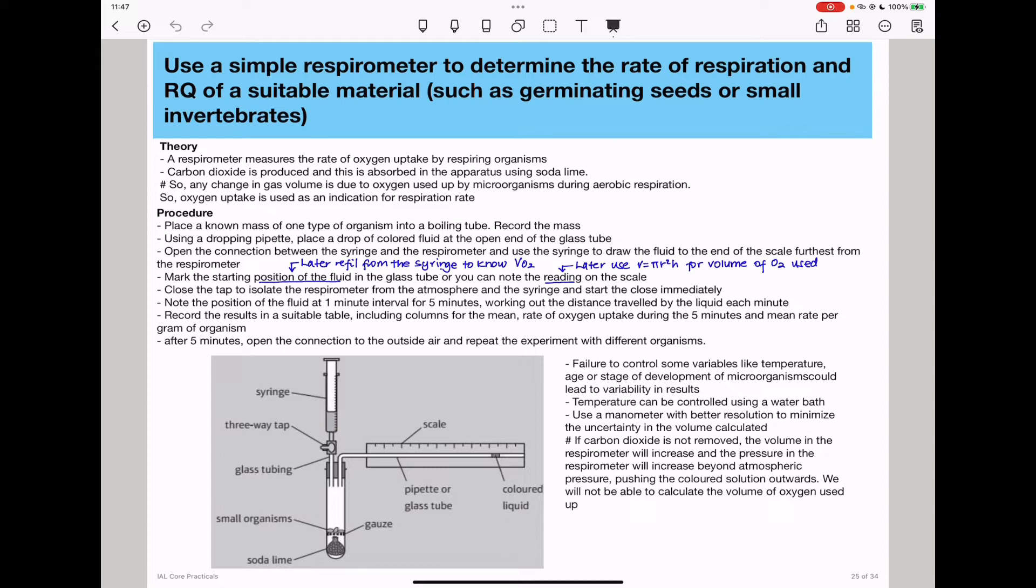For the procedure, you will place a mass of one type of organism into a boiling tube. This mass has to be known, and then you will record that mass. Then you use a dropping pipette to place a drop of colored fluid at the open end of the glass tube, and then open the connection between the syringe and the respirometer, and use a syringe to draw the fluid into the end of the scale farthest from the respirometer. Then mark the starting position of the fluid in the glass tube, or you can know the reading of the scale. If you know the reading of the scale, then you're going to use the formula because you'll get the distance moved by the colored solution. Then you close the tap to isolate the respirometer from the atmosphere and the syringe and start the clock immediately.